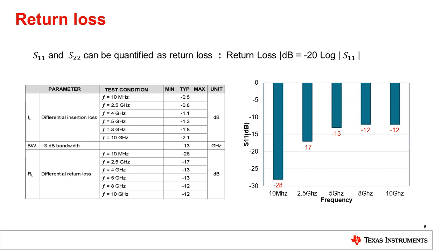The table on the left is a return loss spec in a high speed multiplexer datasheet. As we can see on the bar chart, the return loss increases as the frequency increases. At the low frequency of 10 megahertz, the return loss is only negative 28 dB, but at 5 gigahertz, the return loss is increased to negative 12 dB.